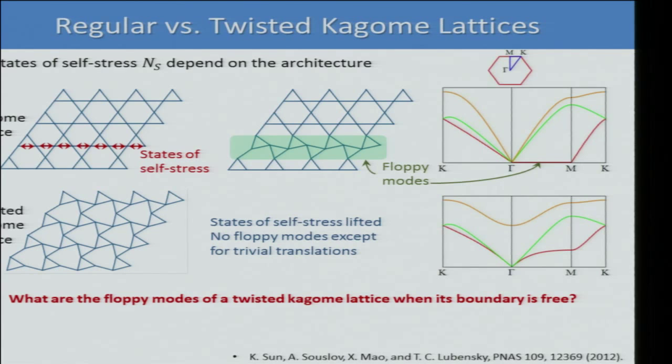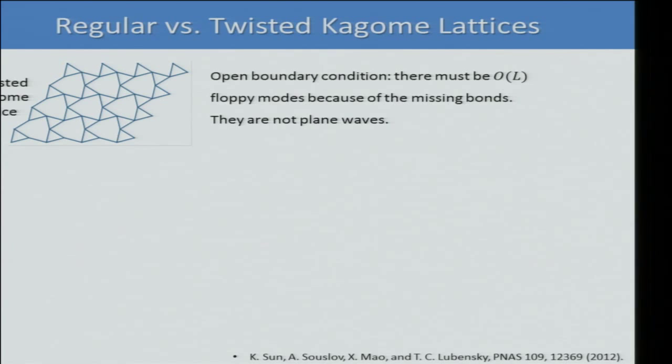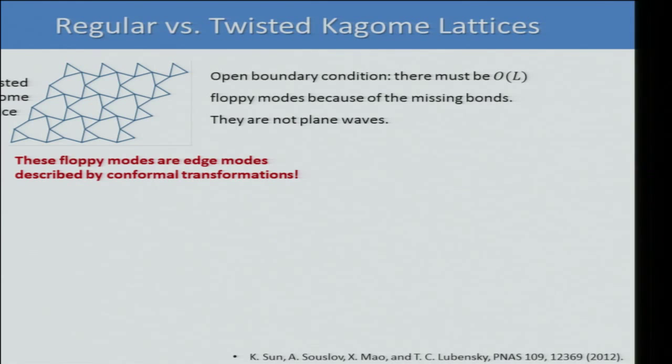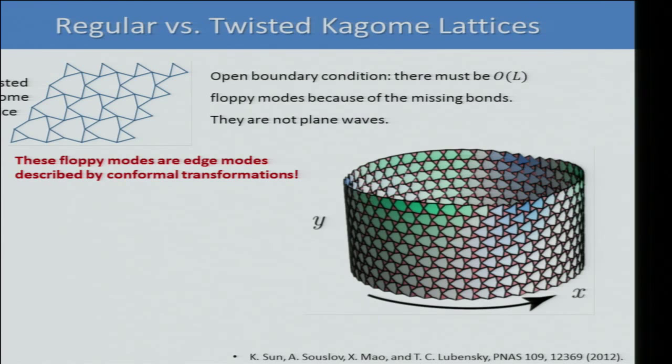Under open boundary conditions, the twisted Kagome must still have the correct number of floppy modes by counting, but they don't appear under periodic boundary conditions. These modes turned out to be edge modes described by conformal transformations — not plane waves. Here with periodic boundary condition in x and open in y, you can see one floppy mode with large distortions on the top edge decaying quickly into the bulk.